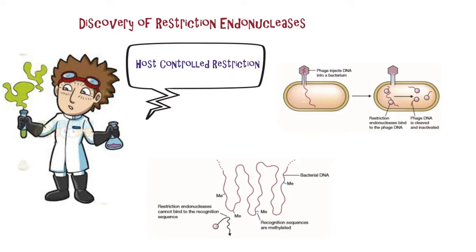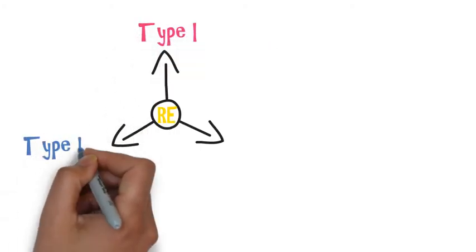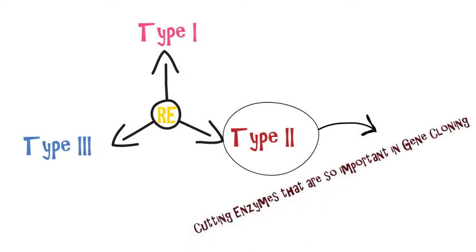These degradative enzymes are called restriction endonucleases and are synthesized by many, perhaps all species of bacteria. Over 500 different ones have been isolated and more than 300 are available commercially. There are different classes of restriction endonucleases recognized, each distinguished by a slightly different mode of action. Type 1 and 3 are rather complex and have only a limited role, whereas type 2 restriction endonucleases are the most important cutting enzymes in gene cloning.